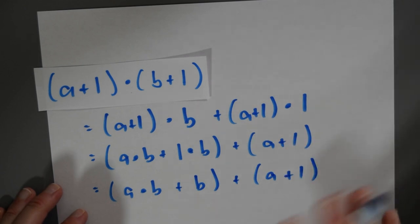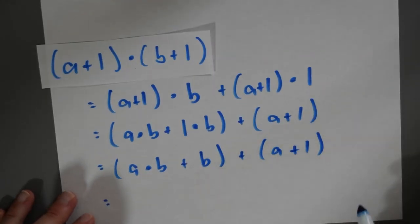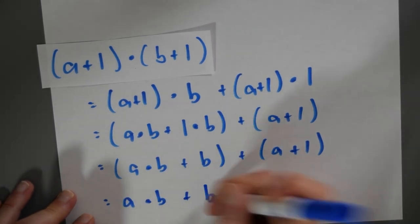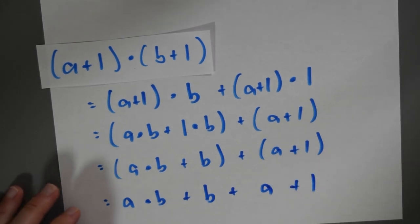And if I want to be a little sloppy with associativity, I could just write that this is a·b + b + a + 1. But of course, this only makes sense because I'm also assuming that addition is associative.